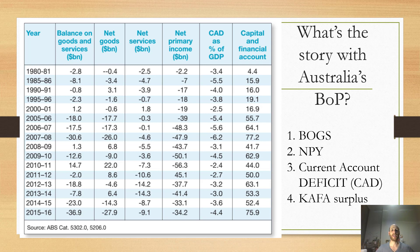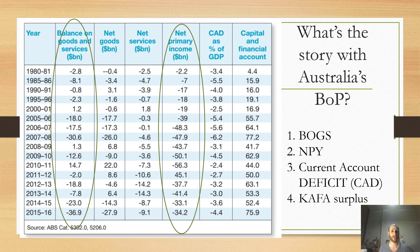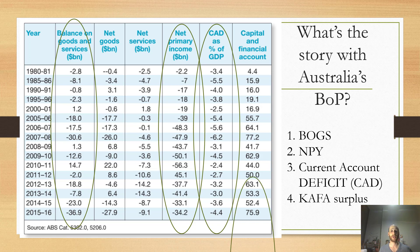If we look at the story with Australia's balance of payments, there are four things we need to focus on. One is the balance on goods and services — that's this column here. As you can see, BOGS is usually negative. The other thing is net primary income — NPY — which is also usually negative. So the balance of goods and services is usually negative and NPY is pretty much always negative, meaning we are always going to have a current account deficit. That's been the story for Australia going back to the 1980s — with a current account deficit, money flowing in causes a CAFA surplus.